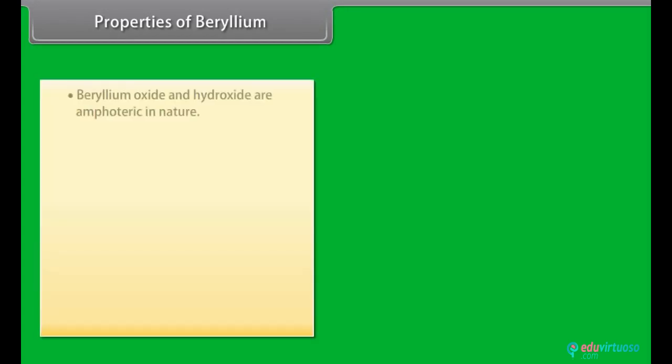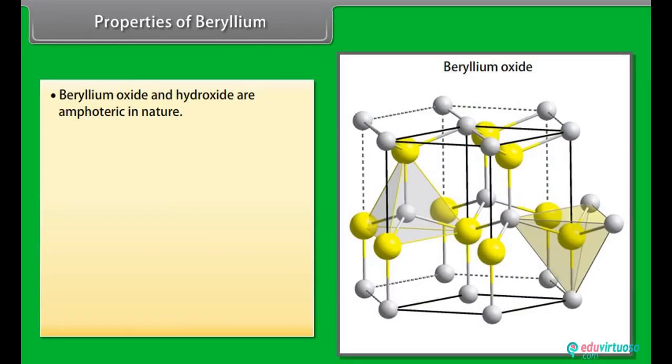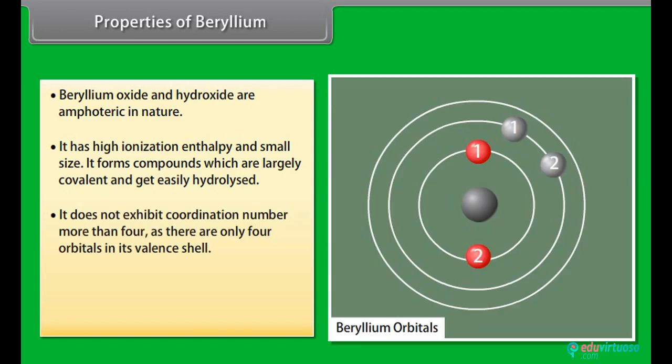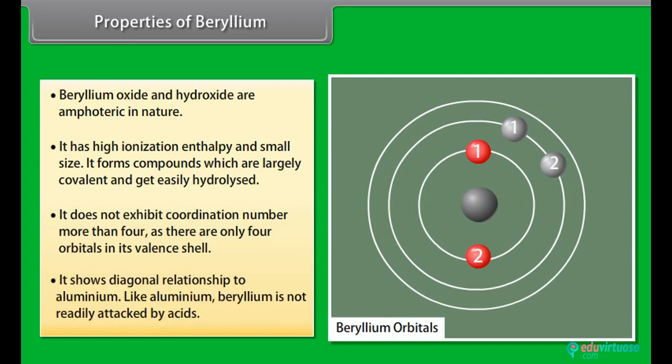Properties of beryllium: Beryllium oxide and hydroxide are amphoteric in nature. It has high ionization enthalpy and small size. It forms compounds which are largely covalent and get easily hydrolyzed. It does not exhibit coordination number more than 4 as there are only 4 orbitals in its valence shell. It shows diagonal relationship to aluminum.